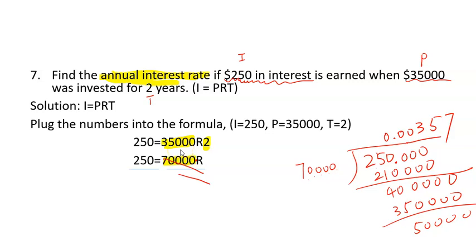So here, two ways. You could get rid of two first, divide both sides by two, and then get rid of 35,000. And what I did is, I went ahead and switched to R, because multiplication has the commutative property. So I can multiply 35,000 by 2 to get 70,000. And then I just need to get rid of 70,000. I divide both sides by 70,000. So 70,000 cancel 70,000. And 250 divided by 70,000, that's what I need to do. So here I show the long division process.